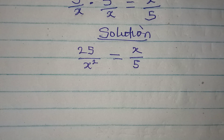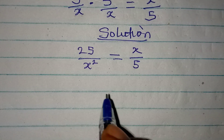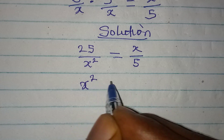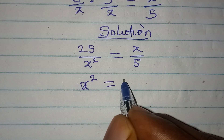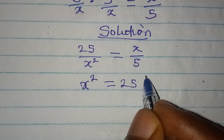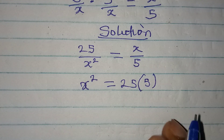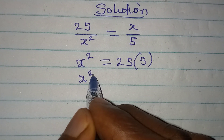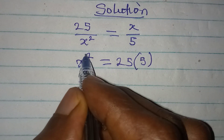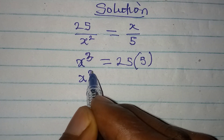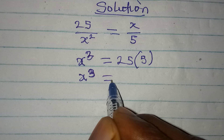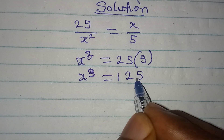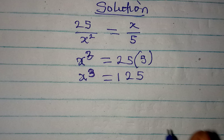The next thing to be done is to cross multiply, so that we have x to the power of 2 equal to 25 multiplied by 5. This means that x to the power of 3 is equal to 125.